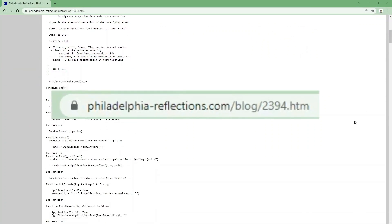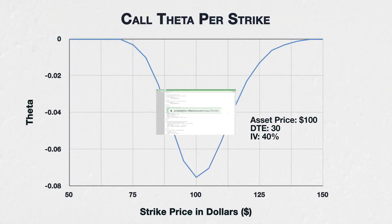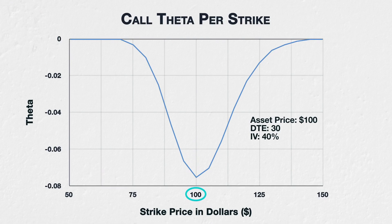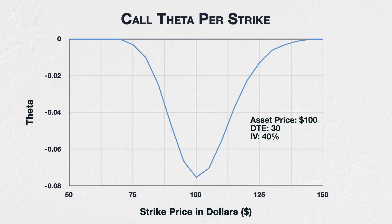The underlying price here is $100, and as you can see, this is where theta is greatest. This means the at-the-money call option with a strike price of $100 will lose more value over the next 24 hours than, for example, the in-the-money $90 call or the out-of-the-money $110 call. If we move further away from the current underlying price, this trend continues — the $80 call has a smaller theta than the $90 call, and the $120 call has a smaller theta than the $110 call.